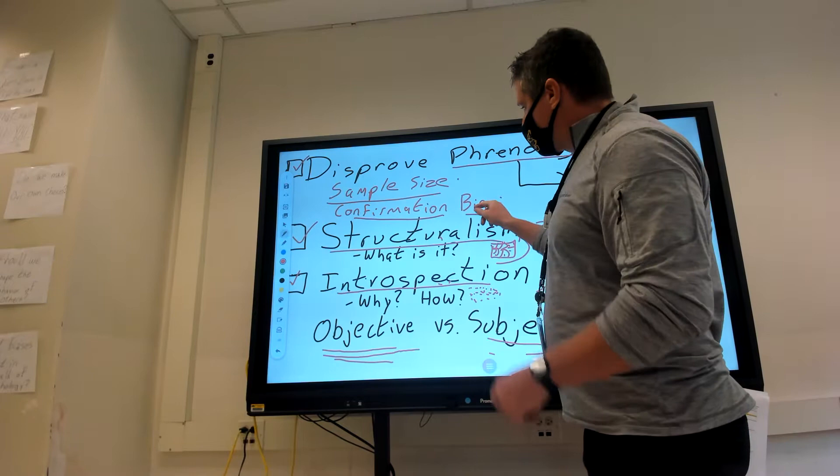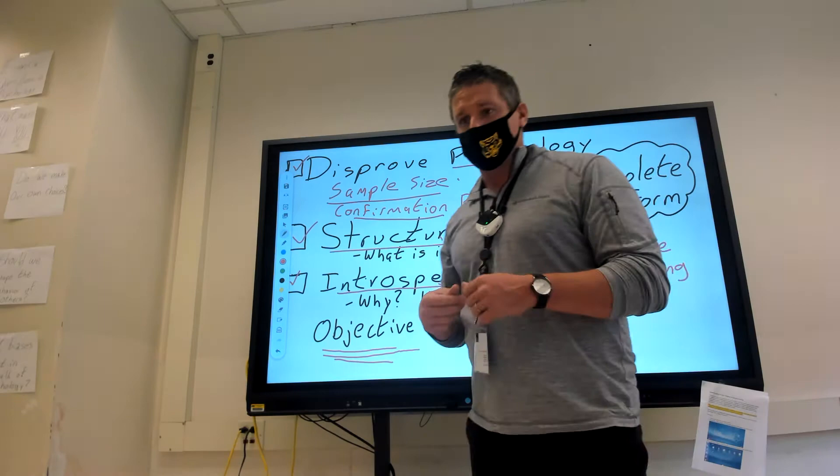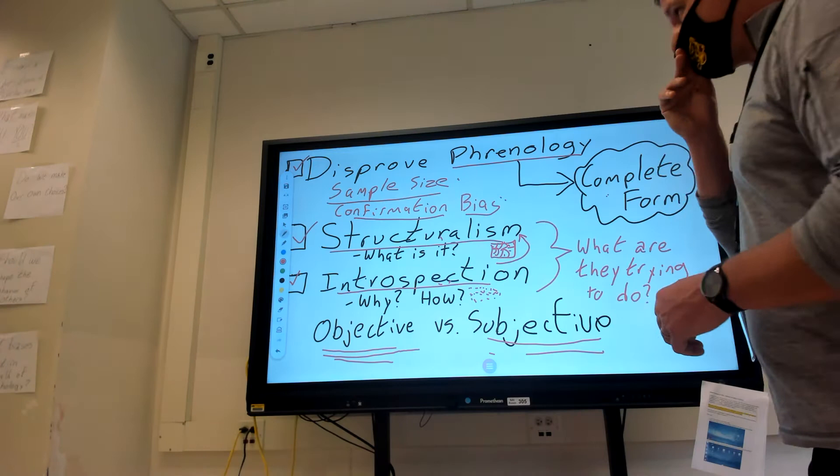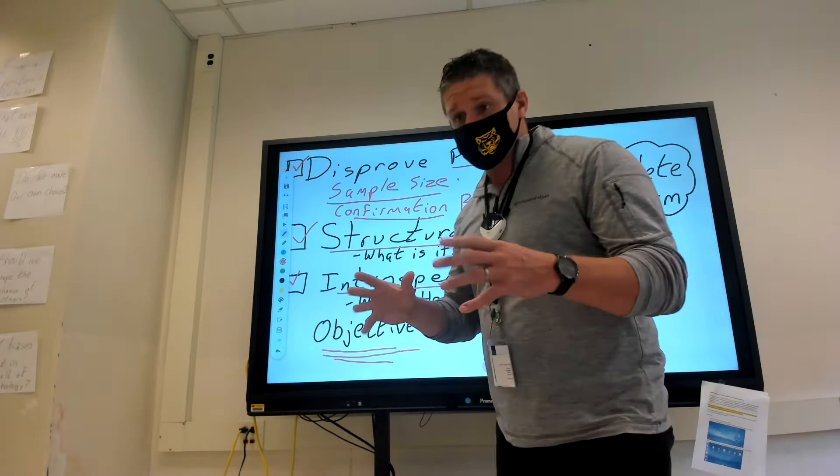So we have to avoid confirmation bias, we have to avoid sample size errors and sampling problems when we don't include things like diversity in our experimentation. Those were identified as problems in phrenology, and our new experiments have to make sure that they don't do that.